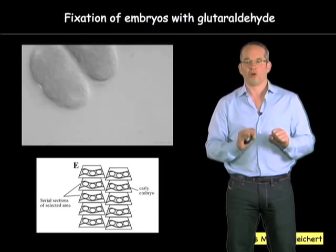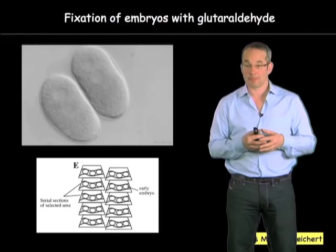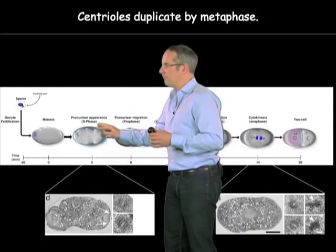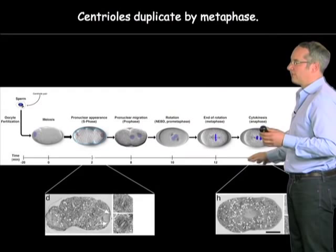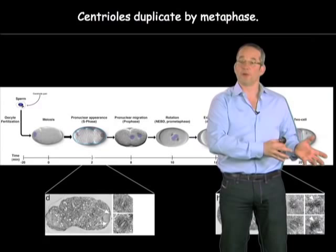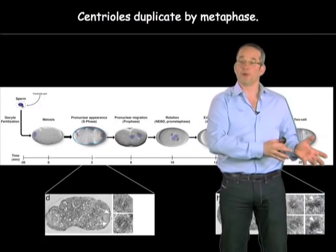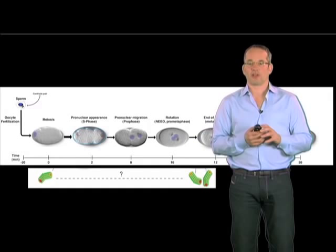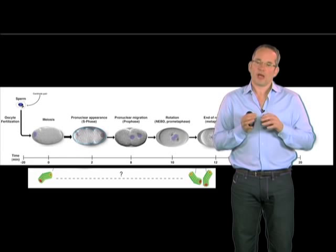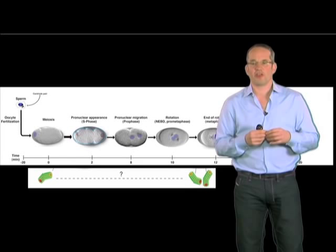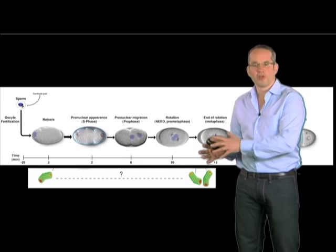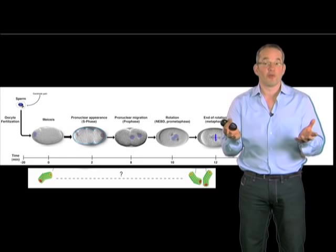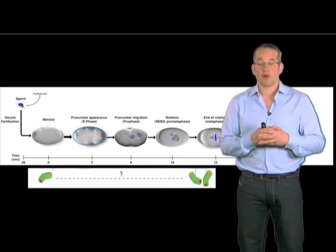Then you can process the embryos for electron microscopy by serial sectioning. What that experiment showed is that centrioles are unduplicated about here, and if you look a few minutes later they've now duplicated. So by metaphase they've actually duplicated — a very fast process. The centrioles have gone from unduplicated to duplicated. We can conclude that there's a duplication process that happens early on in a cell cycle of C. elegans. But then you can ask: how do they duplicate? The glutaraldehyde fixation technique was not good enough to tell us how centrioles are being made — we could see unduplicated and fully-formed centrioles, but couldn't pick up the different stages of centriole duplication.